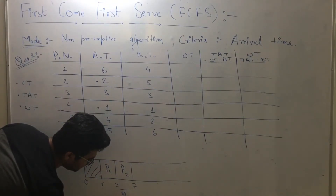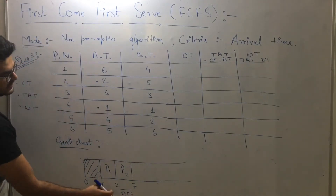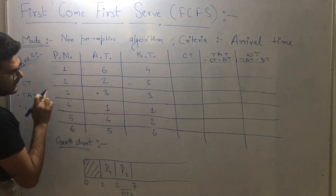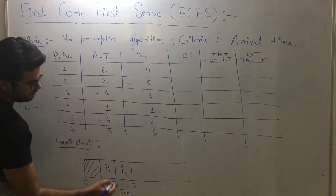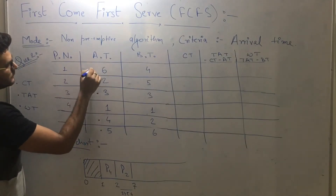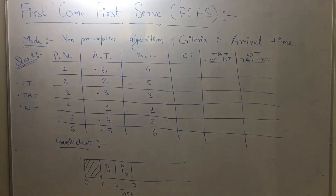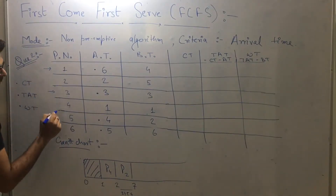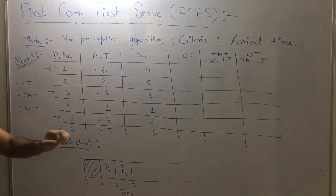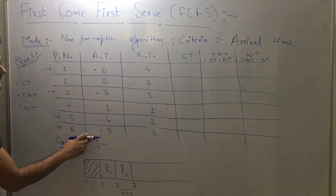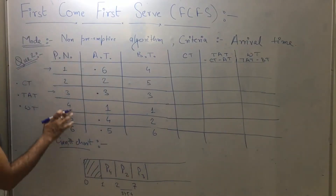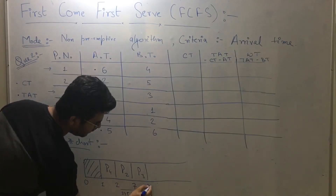From time two till seven, several processes can arrive. Process three arrives at time three, process five at time four, process six at time five, and process one at time six. So all remaining processes — process one, three, five, and six — arrive between time two and seven units. Since our criteria is minimum arrival time, we select process three, which has the minimum arrival time, and schedule it. Process three has burst time of three units, so it will execute till ten units.